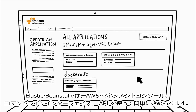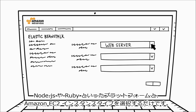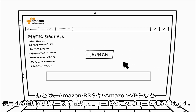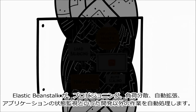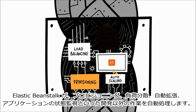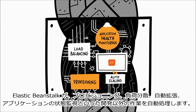You can use the AWS Management Console, the command line interface, or the API. You just choose your platform, like Node.js or Ruby, and Amazon EC2 instance type. Then you select additional resources to use, such as Amazon Relational Database Service or Amazon Virtual Private Cloud, and then just upload your code. Elastic Beanstalk will handle the rest of the deployment details such as provisioning, load balancing, auto-scaling, and application health monitoring.